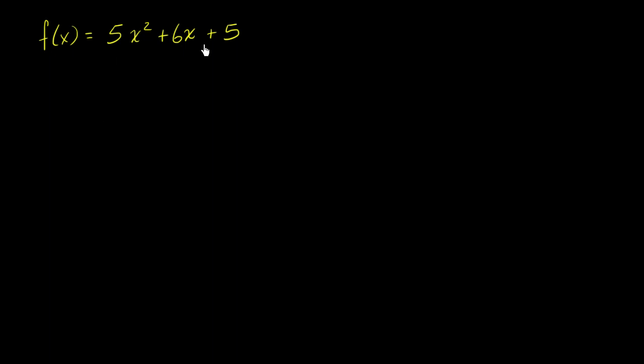So if we're looking for the x values that would make this expression equal to 0, that's essentially trying to solve this equation: 5x squared plus 6x plus 5 is equal to 0.